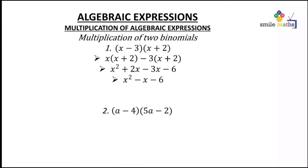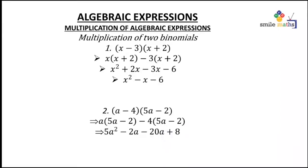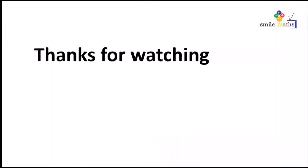Another example: a(5a − 2) minus 4(5a − 2). This gives a times 5a which is 5a², minus a times 2 giving 2a, minus 4 times 5a giving 20a. Then negative times negative is positive, so 4 times 2 gives 8. So we have 5a², and negative 2a minus 20a which is negative 22a, then plus 8. Thanks for watching this video.